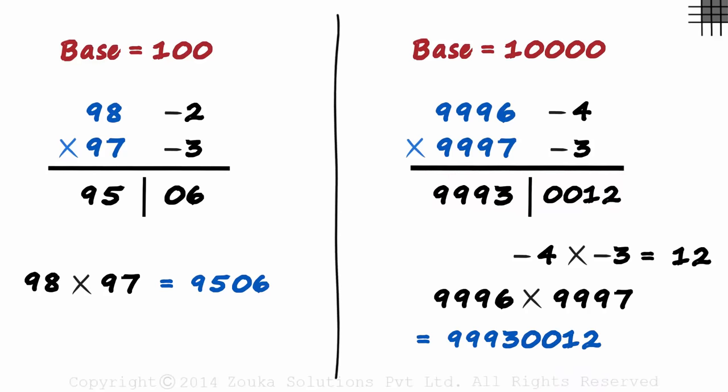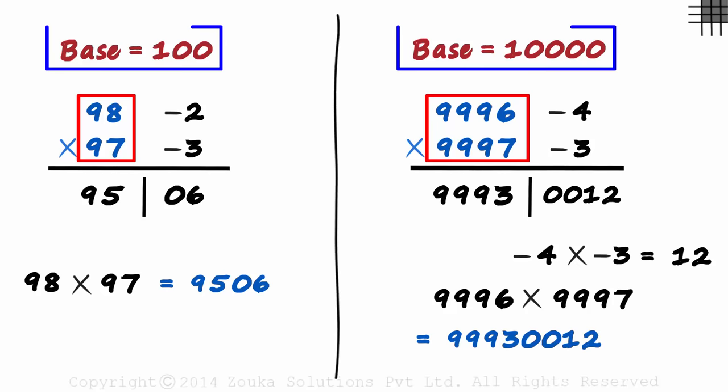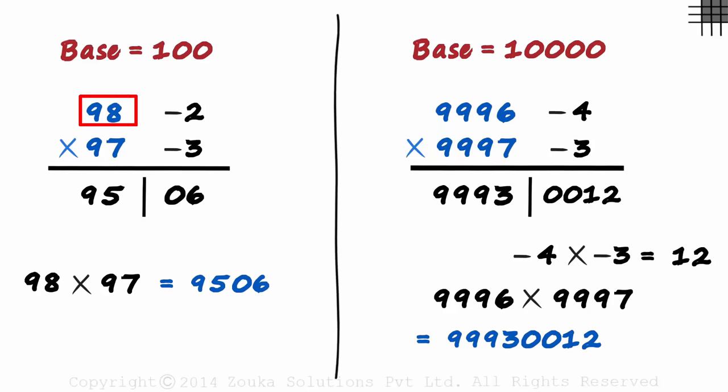Wasn't this quick? Faster than a calculator you think? Notice that in all the examples we saw, both numbers were below the base. 98 and 97 were below 100. 9,996 and 9,997 were below 10,000. We will look at a couple of more examples in the next part of the session. Don't forget the steps. Find the base, find the deviation, find the sum and find the product. And we get the answer.